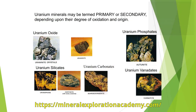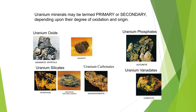Uranium is found in minerals in various forms: uranium oxide, commonly called uraninite; silicates like uranophane and coffinite; or carbonate, phosphate, and vanadate forms — all these minerals are formed in nature. Primary minerals are the uranium oxides and uranium silicates, while phosphates, vanadates, and carbonates are called the secondary minerals.